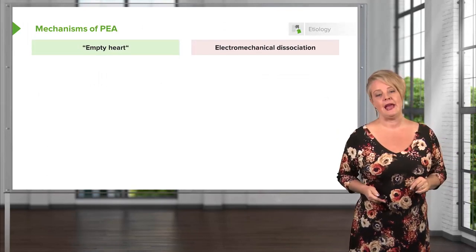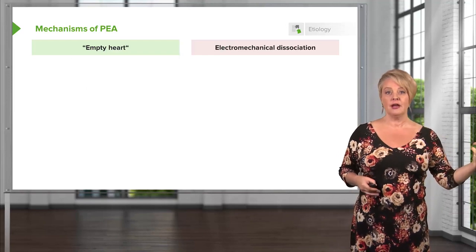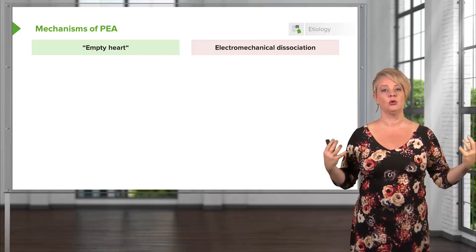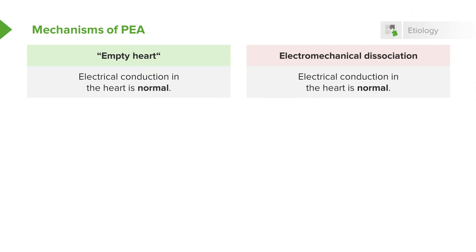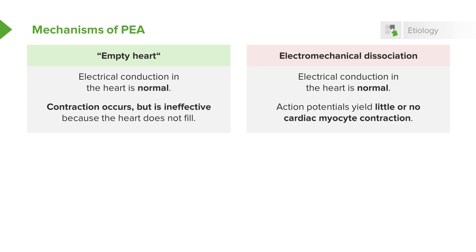There are two major mechanisms of PEA: the empty heart, and EMD, or electromechanical dissociation. In the case of an empty heart, the heart is conducting normally — nothing is wrong with its conduction system. For example, if I were shot in the aorta and all my blood volume poured out on the floor, there's nothing wrong with my heart; it's going to conduct perfectly normally and keep contracting as hard and fast as it can. Contraction occurs and is normal.